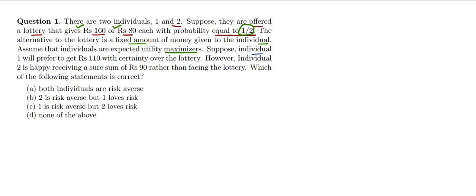Individual 1 prefers to receive rupees 110 with certainty over the lottery. Individual 2 is happy receiving a sure sum of rupees 90 rather than facing the lottery. So both individuals chose the fixed amount of money and left the lottery.